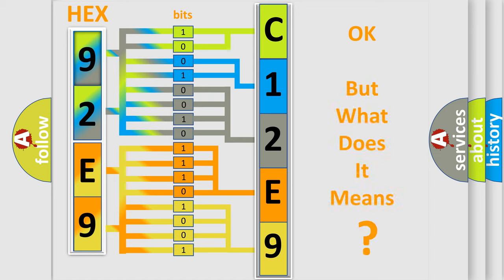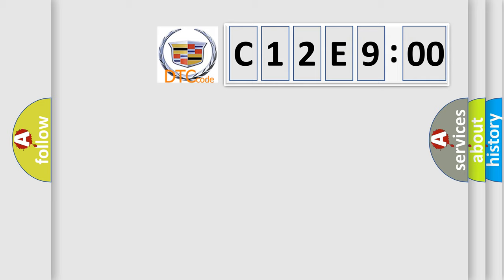The number itself does not make sense to us if we cannot assign information about what it actually expresses. So, what does the diagnostic trouble code C12E900 interpret specifically for Cadillac car manufacturers?